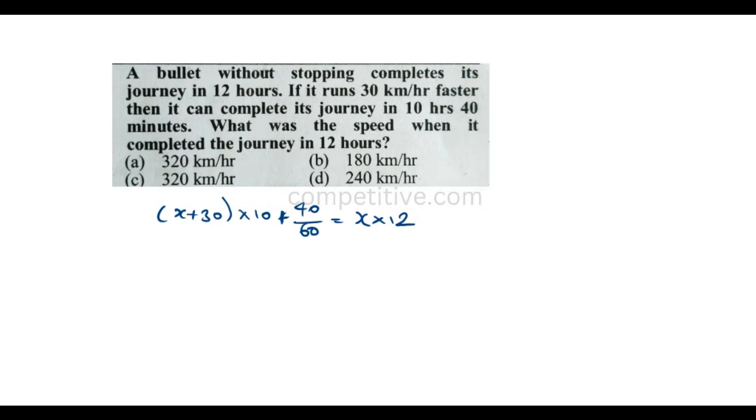Using speed and time, we set up: x plus 30. Canceling zeros: 6 plus 4 = 10, then 60 plus 4 = 64, giving us 64 by 6.